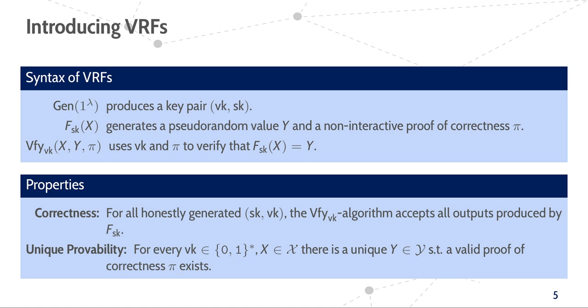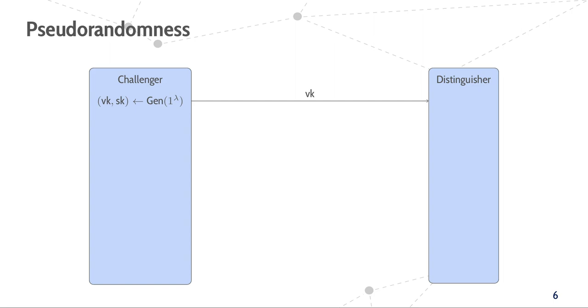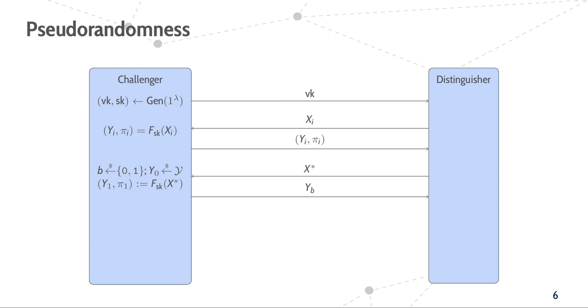Naturally, we also require pseudorandomness from a VRF, which we model using the following security experiment between a challenger and an adversary. The challenger first computes the key pair and gives the public verification key to the adversary, which can then make evaluation queries to the challenger. At some point, the adversary has to state a challenge input X star for which it has not queried an evaluation before. The challenger answers the adversary's challenge input with either the honest evaluation or with a uniformly random element from the VRF's range. However, the proof of correctness is not given to the adversary for the challenge input.